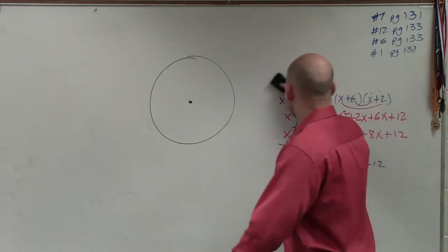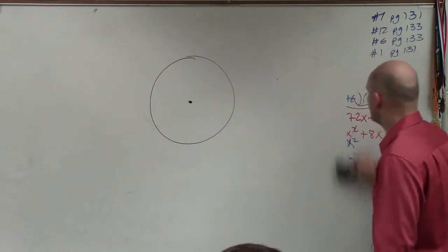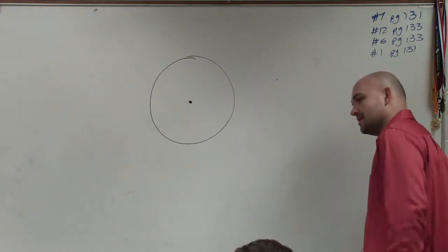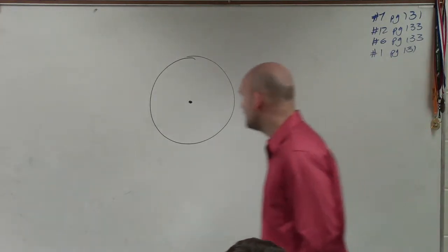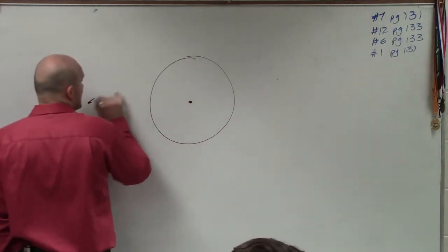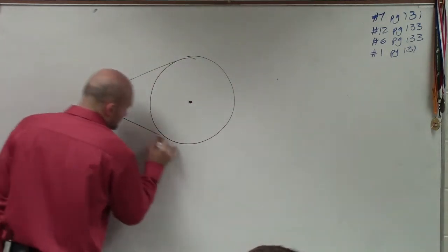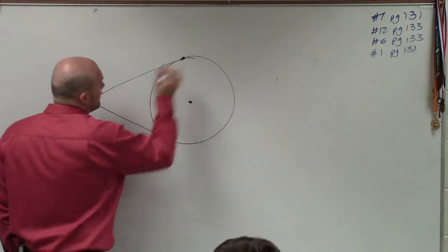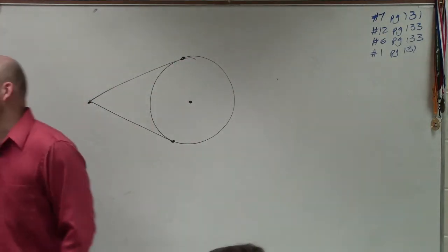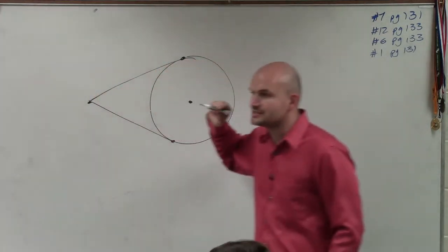So before, you guys understood when we were talking about tangent lines. And maybe I'll pick on somebody. Asia, if I have a circle... I thought you said Asia and not Asia. Asia, if I have a circle and I draw two tangent lines, how do these two tangent lines compare?